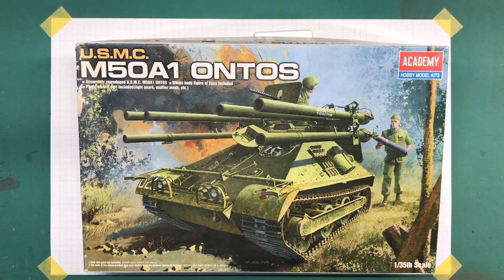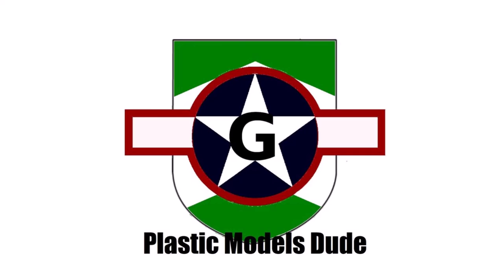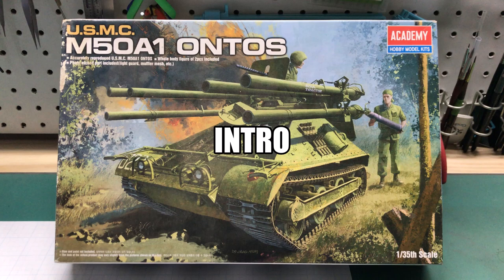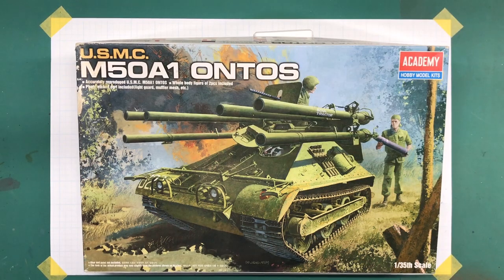Time for something green. Hi everybody, welcome back to Plastic Models by a Regular Dude. In part one, the intro to my next project, the Academy 1:35th scale M50A1 Ontos. This kit is another one Keith, my buddy, gave to me recently. Since I've built quite a few German vehicles of late, I think it's about time I did something in green.